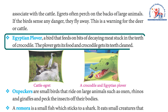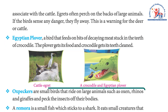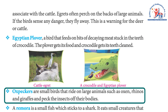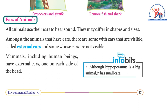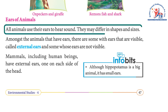The Egyptian plover is a bird that feeds on bits of decaying meat stuck in the teeth of a crocodile. The plover gets its food and the crocodile gets its teeth cleaned. Oxpeckers are small birds that ride on large animals such as oxen, rhinos, and giraffes, and peck the insects off their bodies. A remora is a small fish which sticks to a shark and eats small creatures that live on the shark's body.